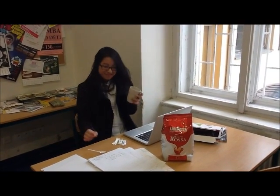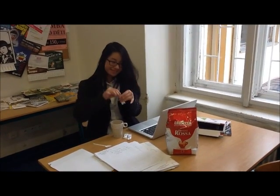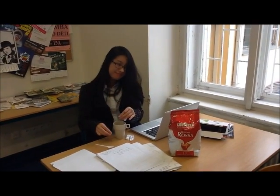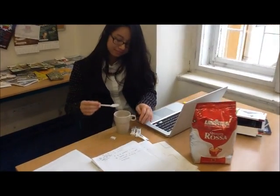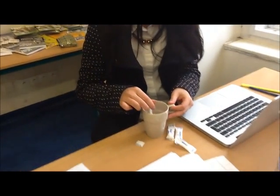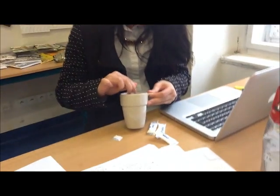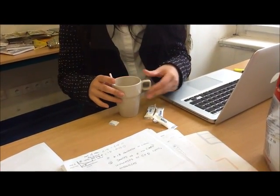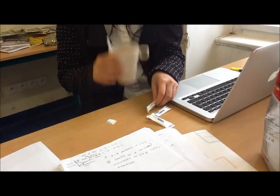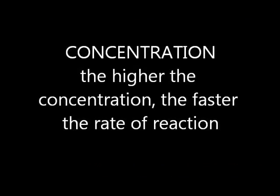Vicki hates it when her coffee is too strong, so she needs to add some sugar. The more sugar she adds, the more energy she will have, as sugar contains glucose which gives us energy. The higher the concentration of a substance, the faster the rate of reaction will be. We can compare this to the sugar that Vicki adds to her coffee — the more sugar she adds, the more energy she will have.